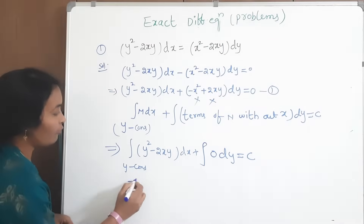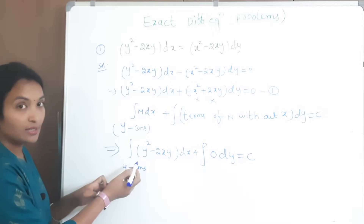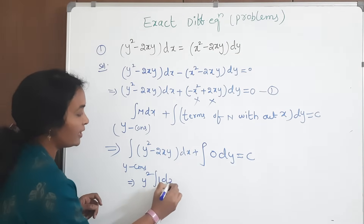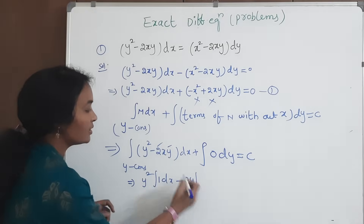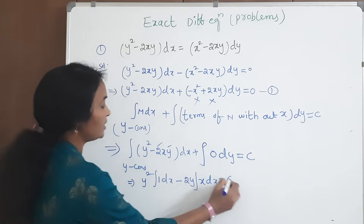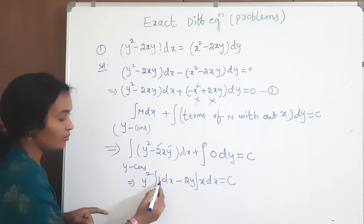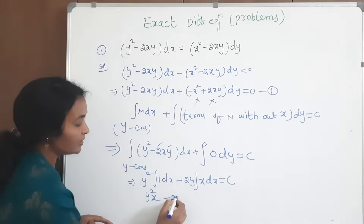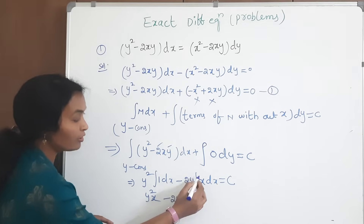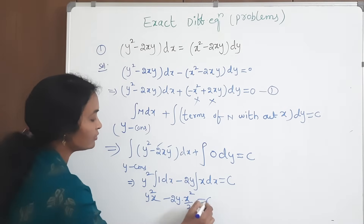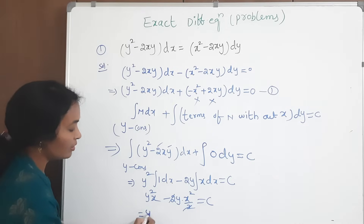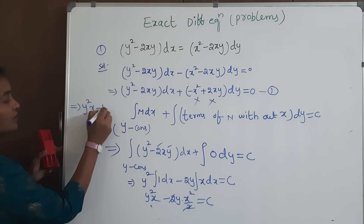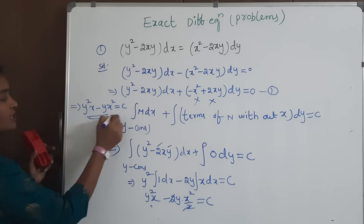Now simplify the integral. y is a constant, so take it outside: y² integral of 1 dx gives y²x. For minus 2xy, both 2 and y are constants: minus 2y integral of x dx gives minus 2y times x²/2, and the 2s cancel. Therefore the solution is y²x minus yx² = c. This is our required solution.